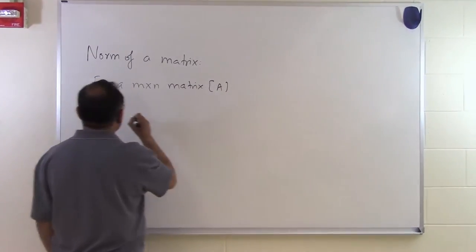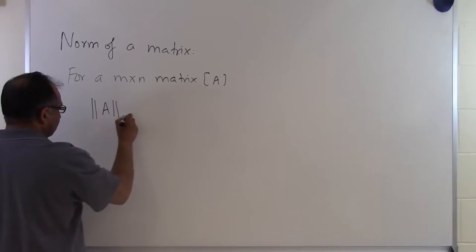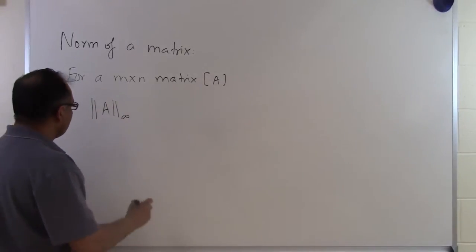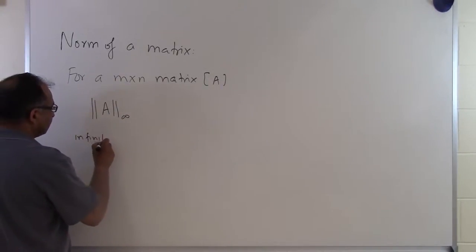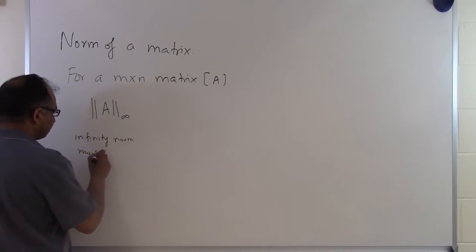we are going to define the infinity norm, or what is called the row sum norm. So this particular norm is called the infinity norm. It is also called the row sum norm.